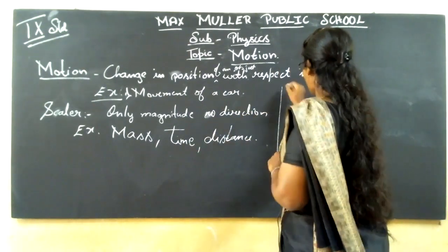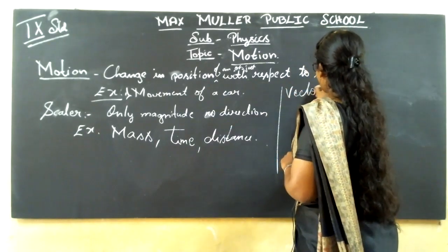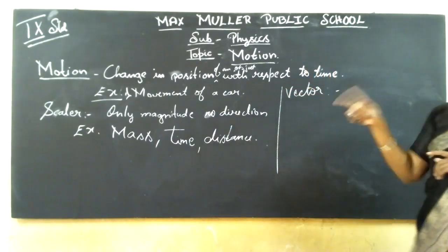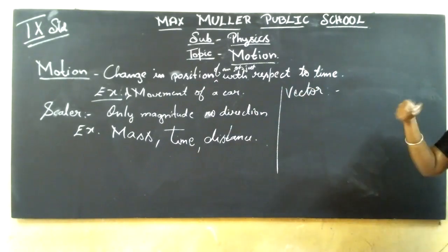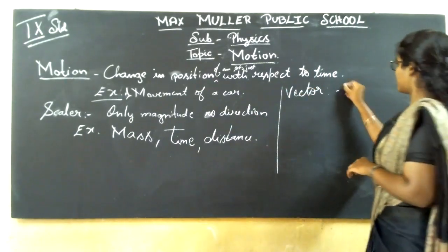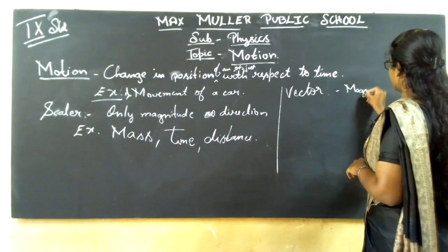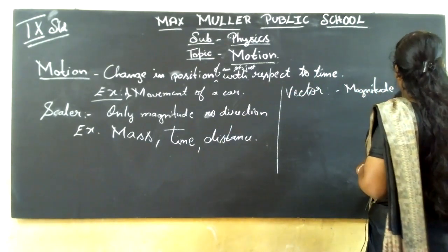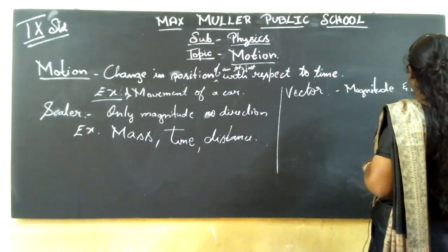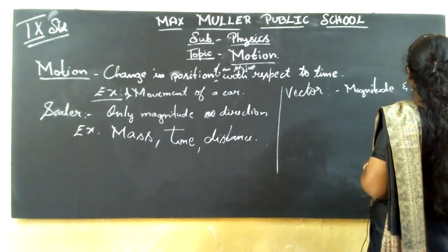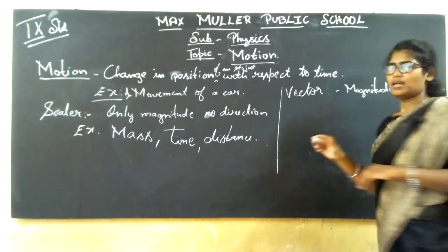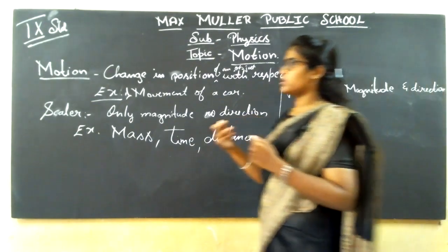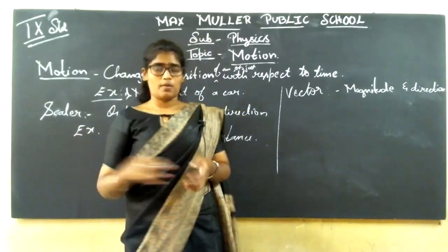Then what is vector quantity? Vector quantity has both magnitude and direction. What all comes under magnitude and direction? We will talk about that.